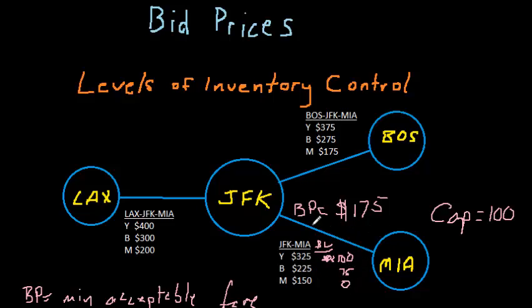This bid price sets the bar so that all fare classes with fares lower than the bid price are unavailable, and all fare classes with fares above the bid price are open and available.